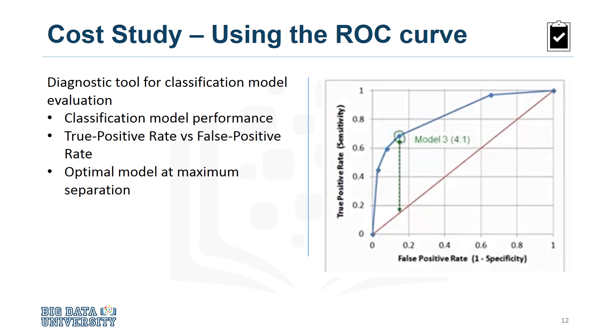By plotting the true positive rate against the false positive rate for different values of the relative misclassification costs, the ROC curve helped in selecting the optimal model.